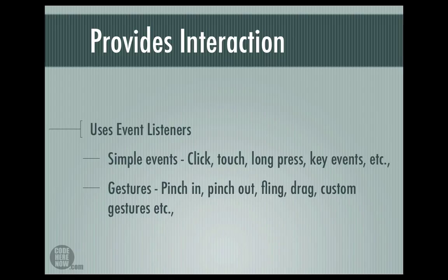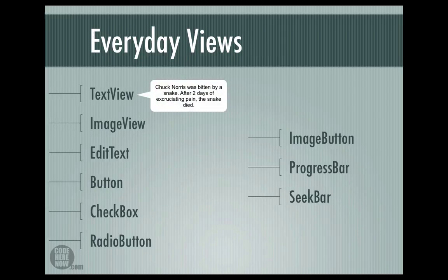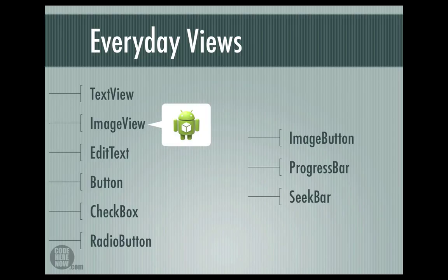We are going to start with the list of views that we are already familiar with — the ones which we will be using very commonly. The first one is the text view. A text view displays text to the user and is ideal for displaying information. It can display single or multi-line text, and the font or text size associated with the text view can be changed. An image view is often used for aesthetic purposes and can also be used for showing information such as a profile picture.